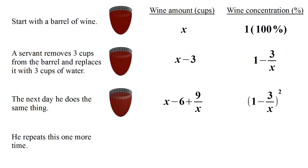The following day the servant does this one more time, so the wine gets even more diluted. From the amount of wine in the previous day, we subtract out three times the concentration of wine from the previous day. We can simplify this fraction to figure out the amount of wine remaining in the barrel. This will be X minus nine plus 27 over X minus 27 over X squared.